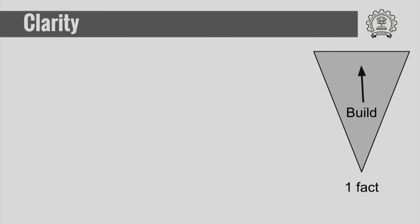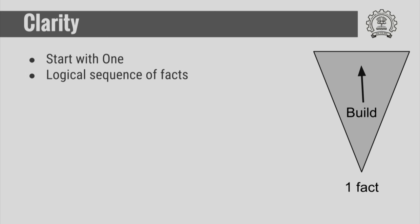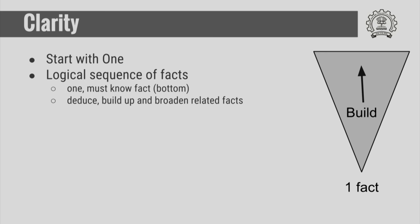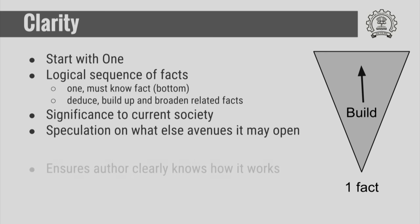Firstly, clarity. When you write science for the general public, you stress on one fact, and this one fact needs to be built from the bottom up. You do not go and state several important facts from all that you have done — just one fact. Start with one and slowly build it up by a logical sequence of facts using deduction and related facts. If you are clear yourself about this one fact in the article you are going to convey, it will also come out in the way you express the detailed article.